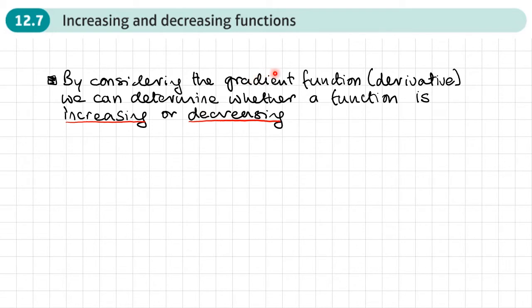If we find that on a particular set of values — on what we call an interval — the gradient function is always positive, then we can say that the function itself is increasing. And if on a different interval we find that the gradient function is always negative, then we can say that the function itself is decreasing.